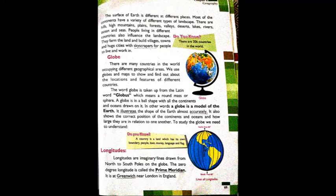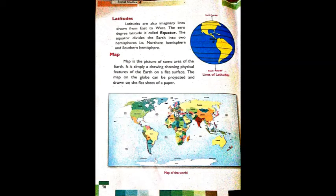Next is latitude. Latitudes are also imaginary lines drawn from east to west. As you can see in the picture, latitudes are imaginary lines - no line is actually drawn on the ground, so these are imaginary, conceptual lines drawn from east to west. The zero degree latitude is called the equator.